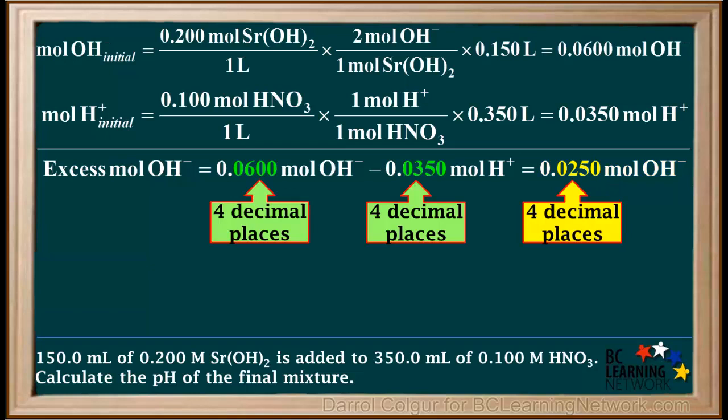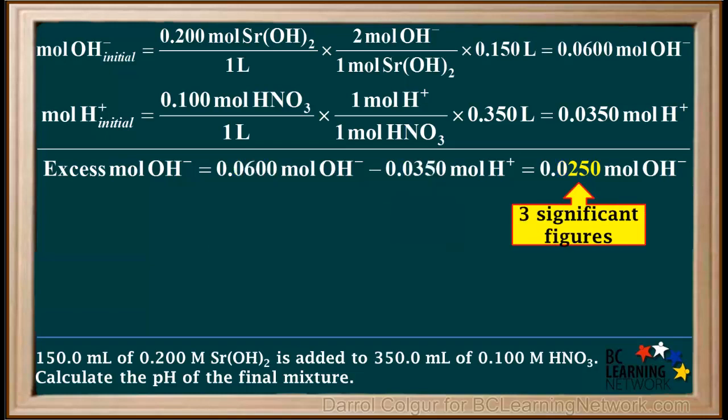Notice the numbers we're subtracting both have four decimal places, so our answer must also have four decimal places. When expressed to four decimal places, this number has three significant figures. The zeros to the left of the two are not significant, but the zero after the five is.